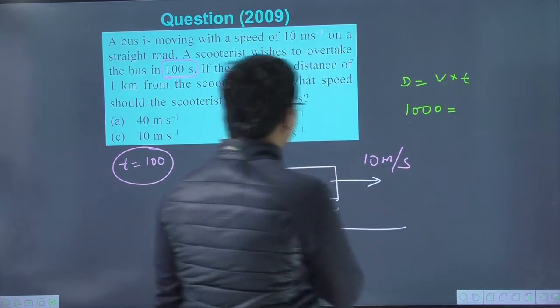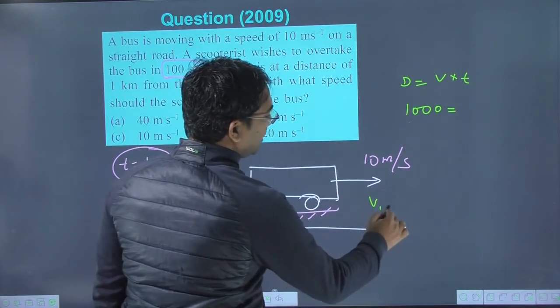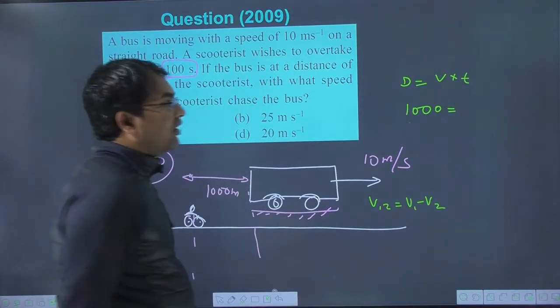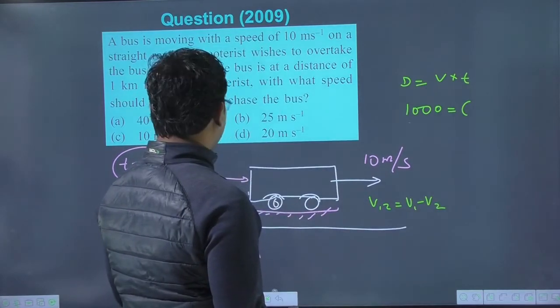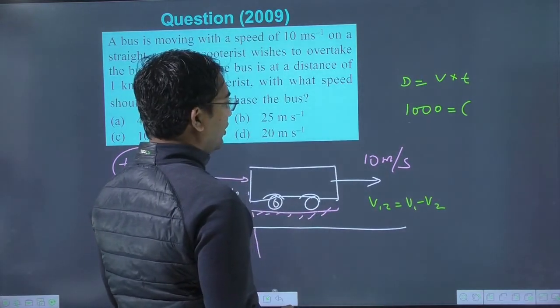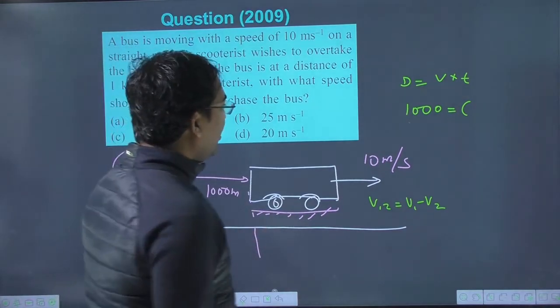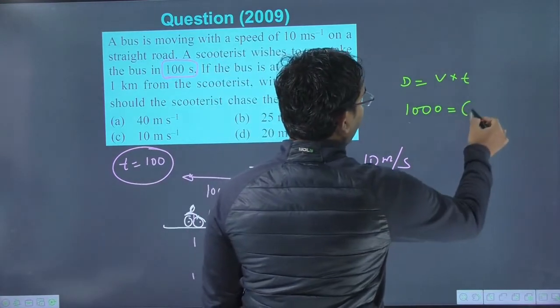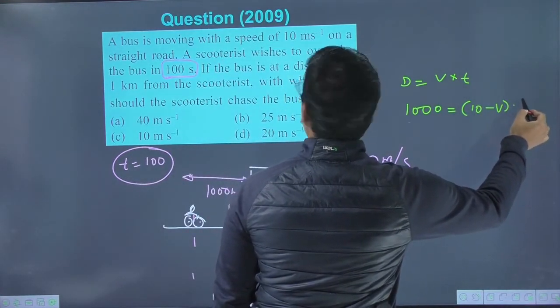So relative speed, when two directions are the same, velocity of 1 with respect to 2 is V1 minus V2. When in the same direction, relative speed of one with respect to the other is V1 minus V2. So 10 minus V, and the time is 100 seconds.